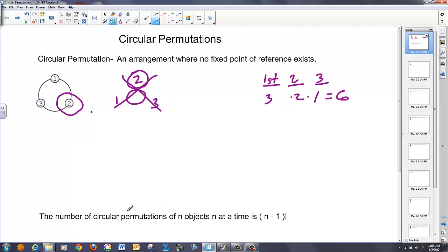And it turns out if you have n items that you're arranging around a circular table at the same time, the number of permutations is actually n minus one factorial.